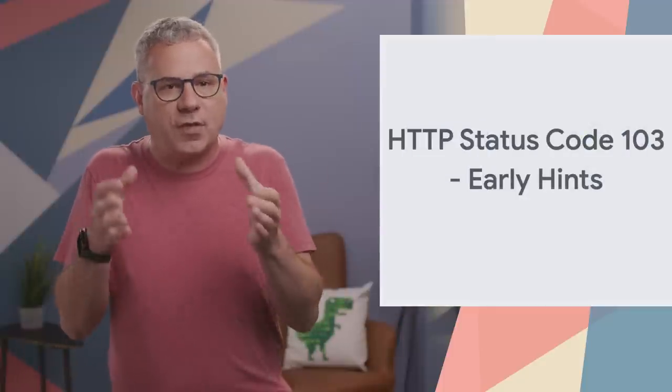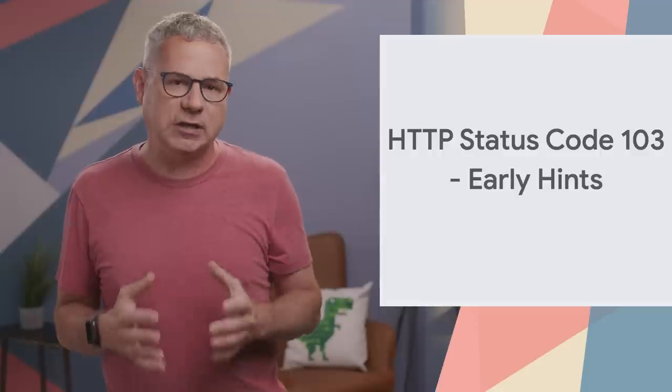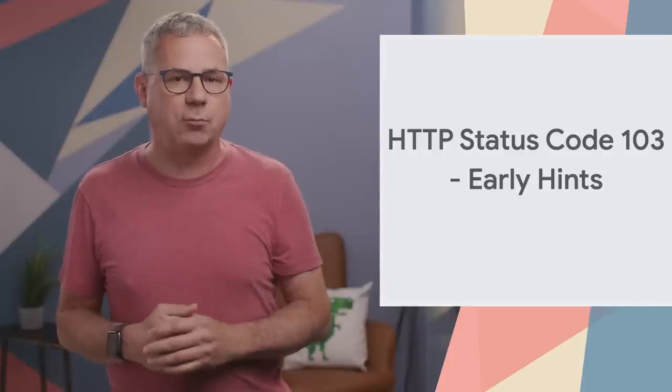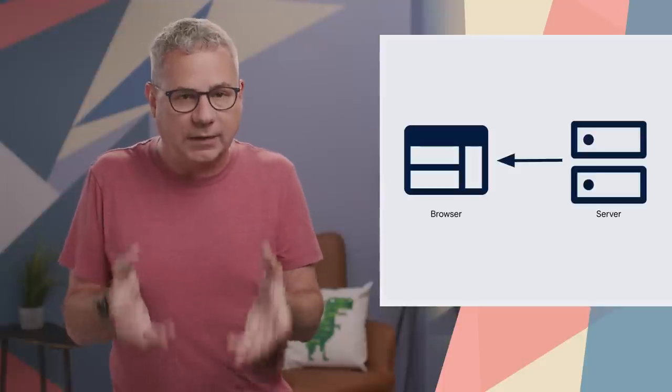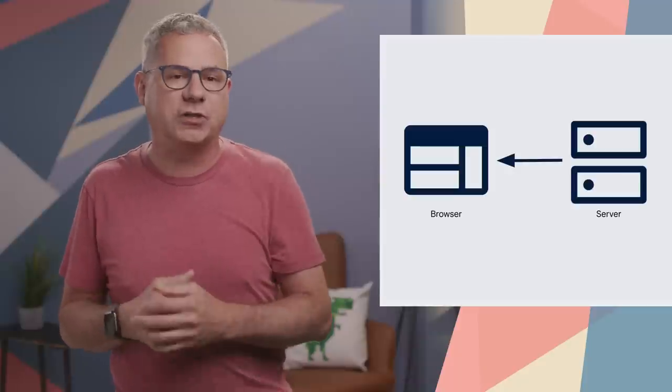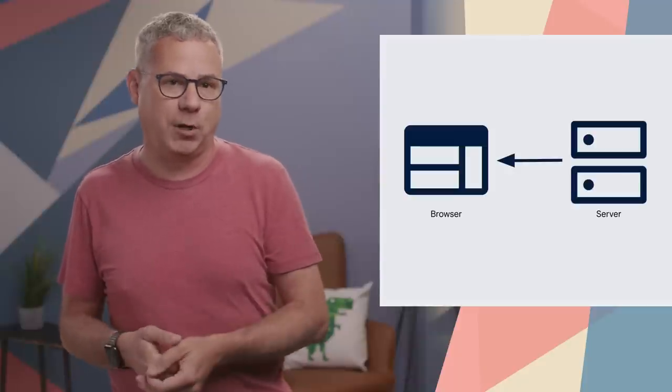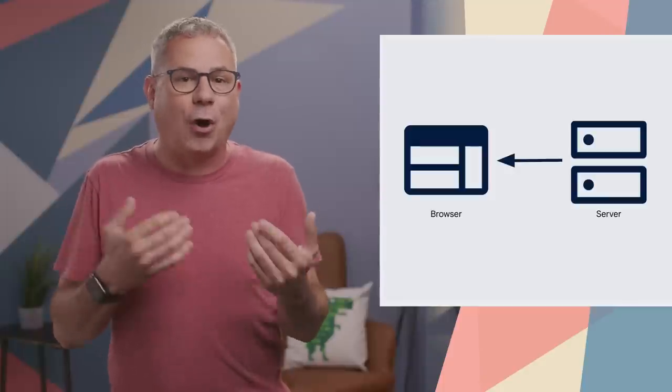But if the server knows that the page will need a certain set of sub-resources — for example, a CSS file, maybe some JavaScript or a few images — it can immediately respond with a new HTTP 103 Early Hints status code and ask the browser to preload those sub-resources. Then once the server has generated the page, it can send it with the normal HTTP 200 response. As the page comes in, the browser has already started loading the required resources.